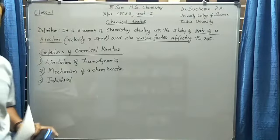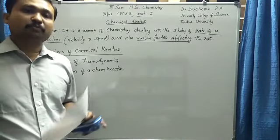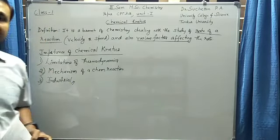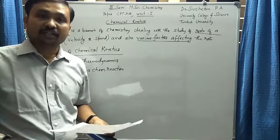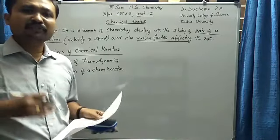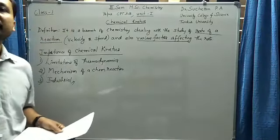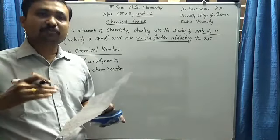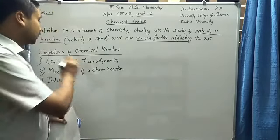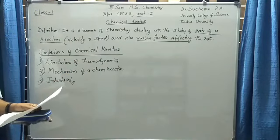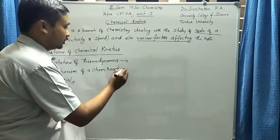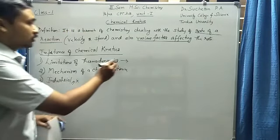The third importance is industrial importance. Whenever we are carrying out a new chemical reaction in an industry, it is very important to know the rate of the reaction — whether it is a slow reaction or a very fast reaction. If it is very fast and cannot be controlled, how do we slow it down? If it is very slow and productivity is low, how can we speed it up? Because of this industrial importance, it is very important to study chemical kinetics.